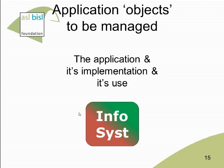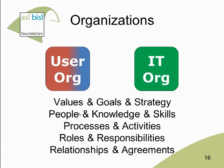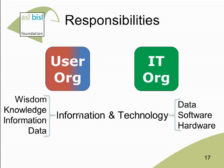Moving on to organizations — both the user organization and the IT organization — what comprises an organization? Values, goals, strategy, people who have knowledge and skills, activities clustered into processes, roles and responsibilities, and relationships and agreements such as service level agreements. I've positioned information on the left-hand side as the responsibility of the user organization, and technology — data, software, and hardware — on the right-hand side as the responsibility of the IT organization.